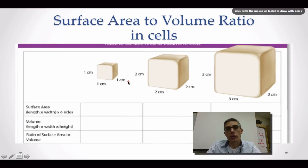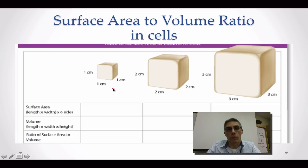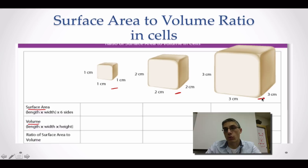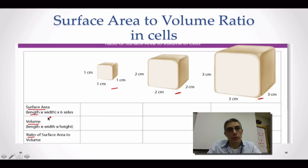One way to look at this is to introduce a little bit of math, which hits home as to why it's so important for cells to remain relatively small. We're going to look at surface area and volume using three different cube-shaped cells. The first cell has dimensions 1x1x1, the second is 2x2x2, and the third is 3x3x3. To determine surface area, we use length times width times the number of sides — for a cube, that's six sides. So the first cube gives us 1 times 1 times 6, which equals 6 centimeters squared.